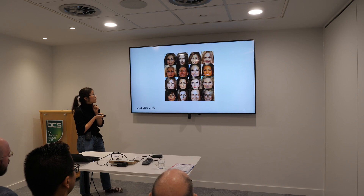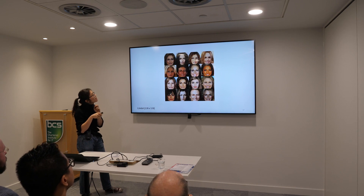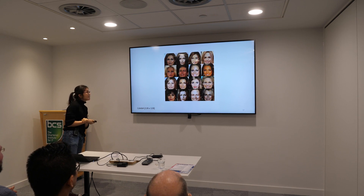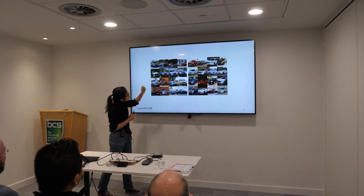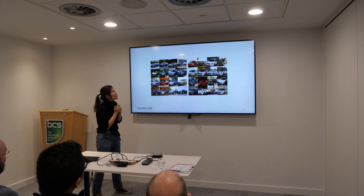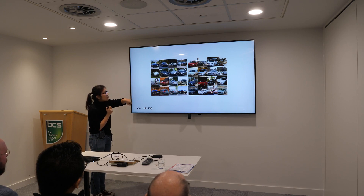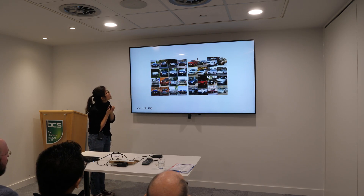On CelebA — the standard GAN face dataset — an interesting thing is that as the faces rotate, the eyes keep looking at the camera, because in the dataset celebrities tend to look at the camera when they take photos. Cars are a very challenging dataset: you have lots of background, lighting, shadows, specularity, and more. Using exactly the same model without any pose labels, we can now generate cars in any direction we want.